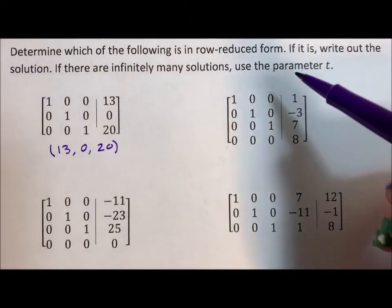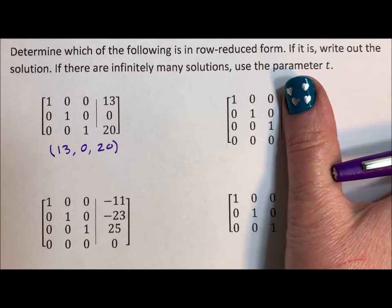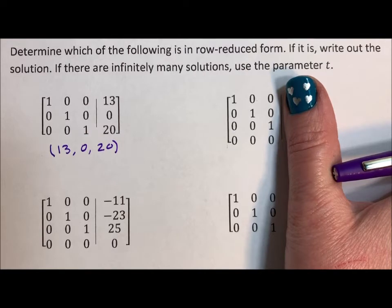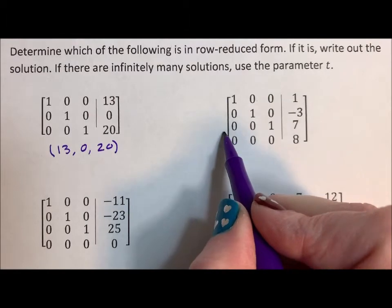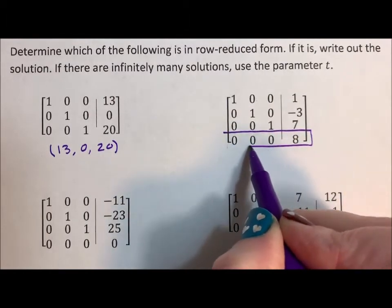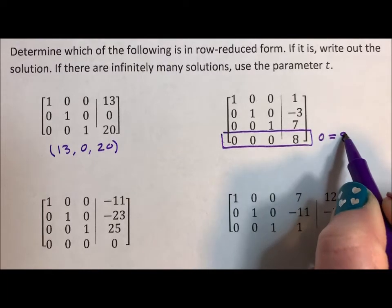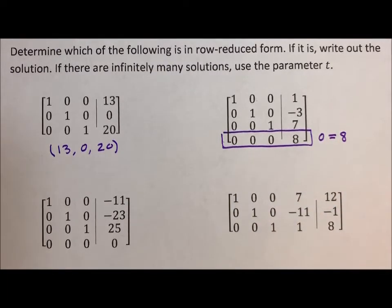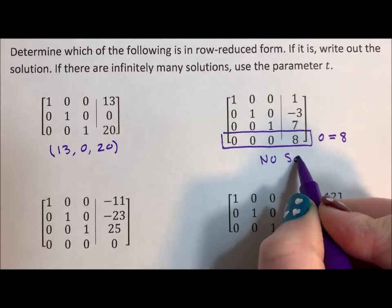In this case, we do have on the left-hand side ones along the major diagonal, zeros everywhere else. So it looks good. We have that row of zeros in the last row, which doesn't matter, except for this one row: 0 equals 8. That's not possible. So this is considered no solution.